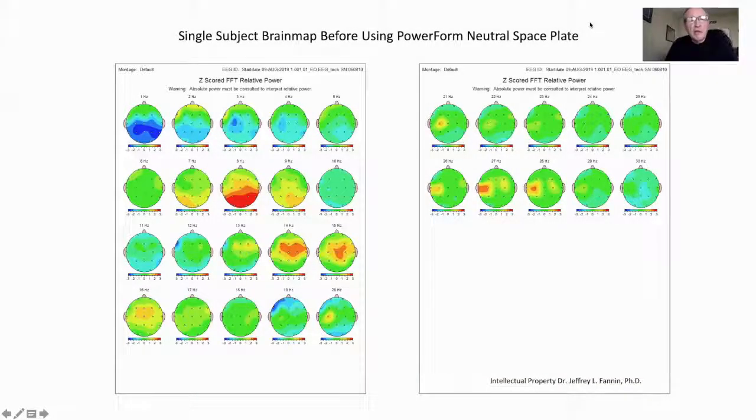Let's take a quick look here at what we call the brain maps where we're looking at 30 Hertz in each of these depictions that show individual frequencies. So we have one Hertz, two Hertz, three Hertz all the way up to 30 Hertz and it helps us understand what's going on in the brain.